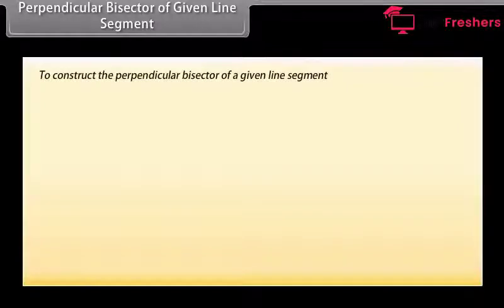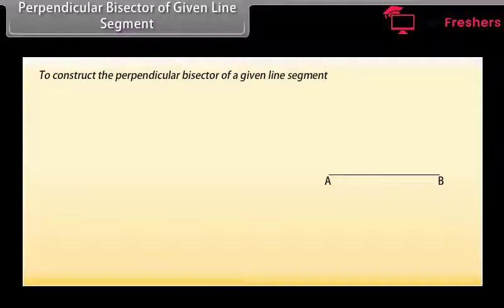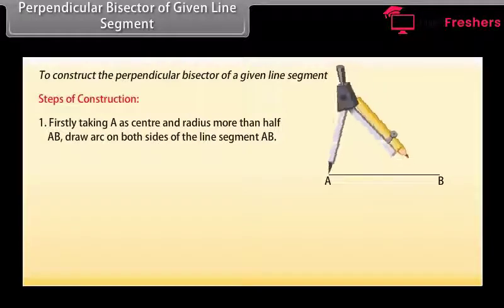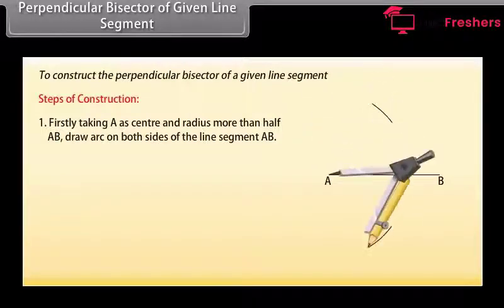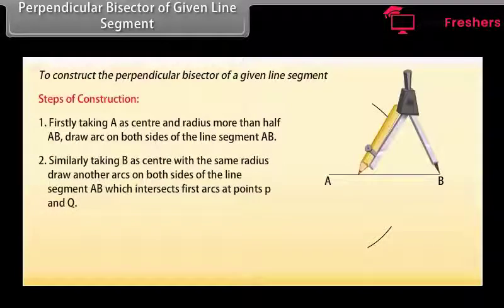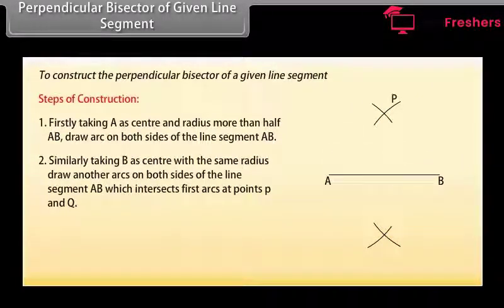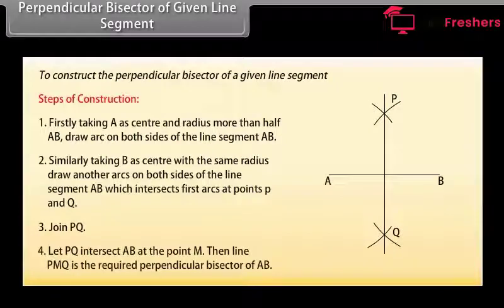Now we will learn to construct the perpendicular bisector of a given line segment. Let us take a line segment AB. We want to construct its perpendicular bisector. Steps of construction: Firstly, taking A as center and radius more than half AB, draw arcs on both sides of the line segment AB. Similarly, taking B as center and with the same radius, draw another arc on both sides of the line segment AB, which intersects the first arcs at points P and Q. Now join PQ. Let PQ intersect AB at the point M. Then, line PMQ is the required perpendicular bisector of AB.